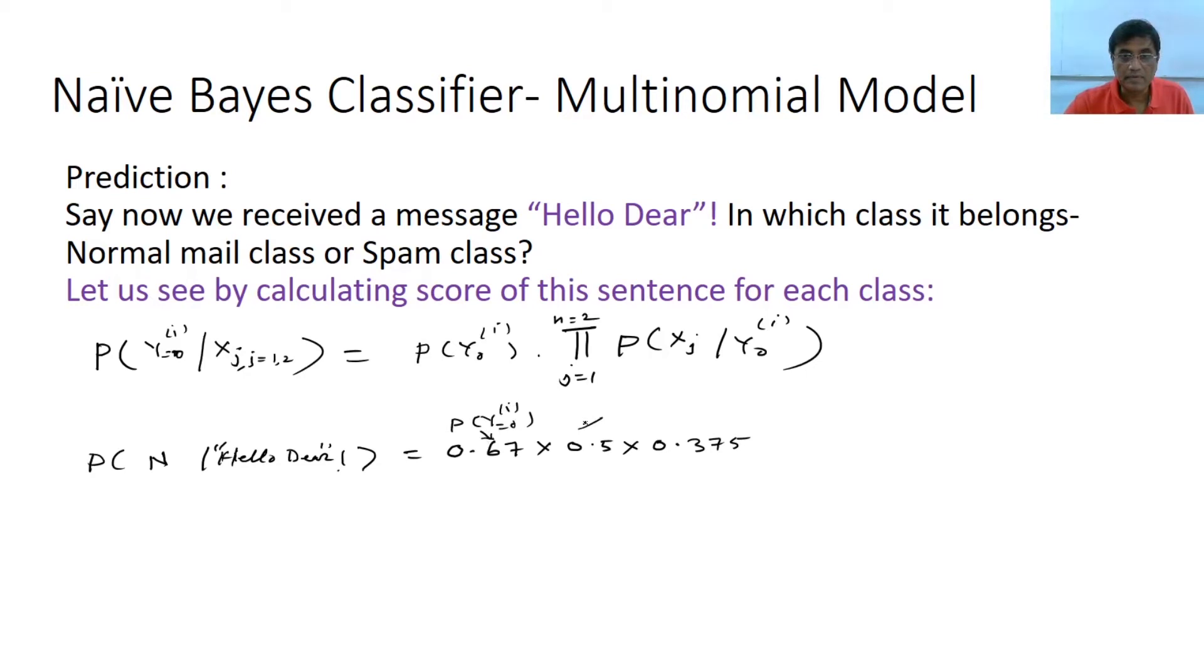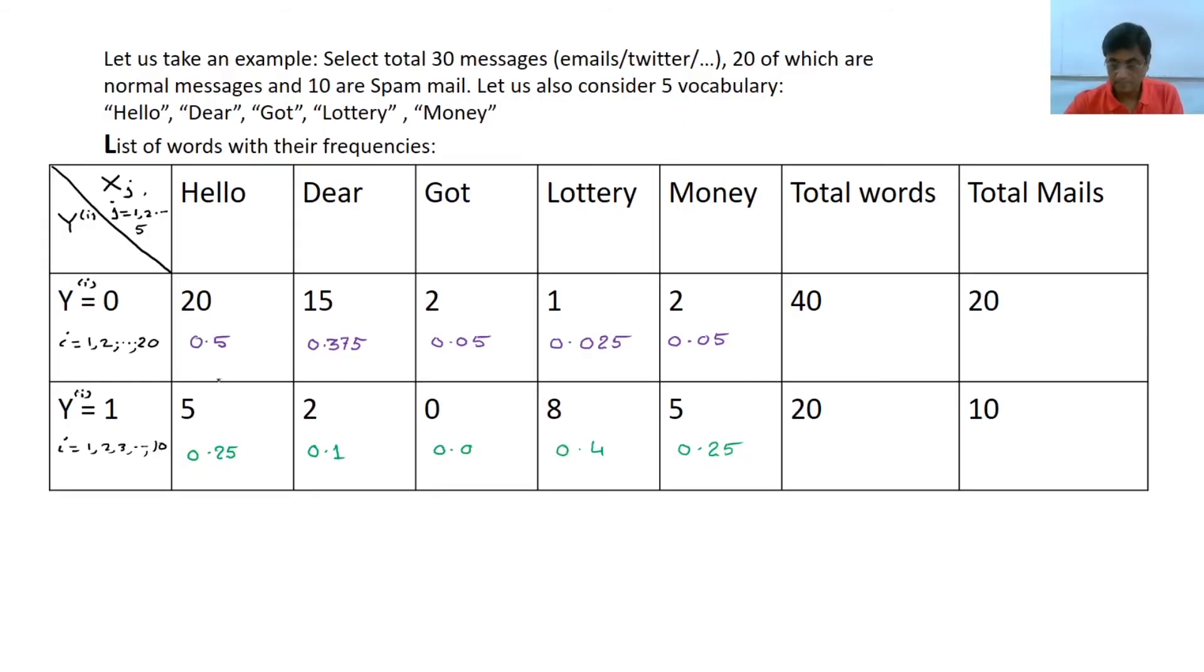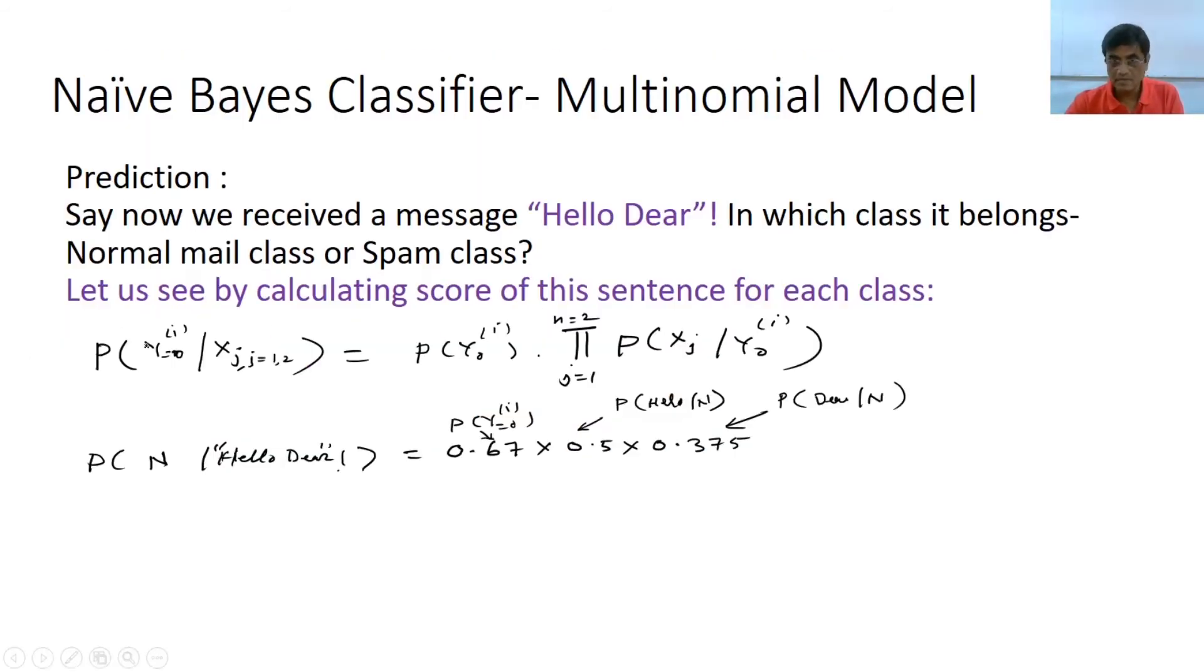And this is the probability that the word hello has, belongs to normal class. So that means the point is the probability, I should not write equal because that is not equal, we have one term missing.